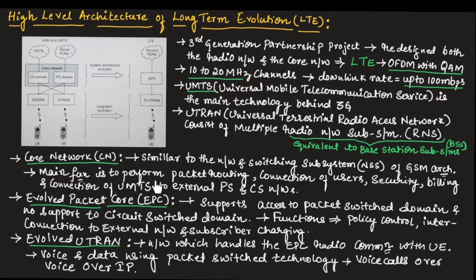The main functions of the core network are to perform packet routing, connection of users, security, billing, and connection of UMTS to external packet switch and circuit switch networks.